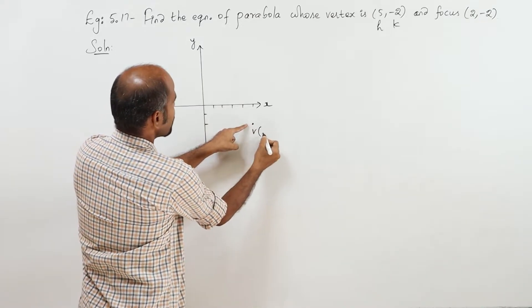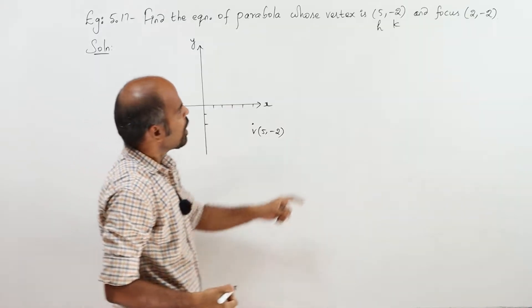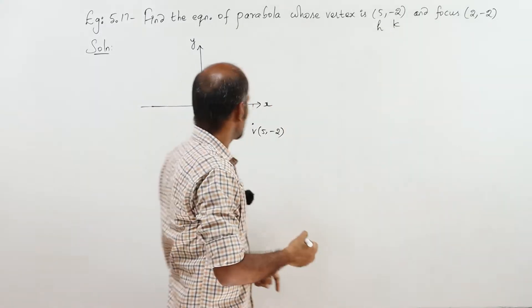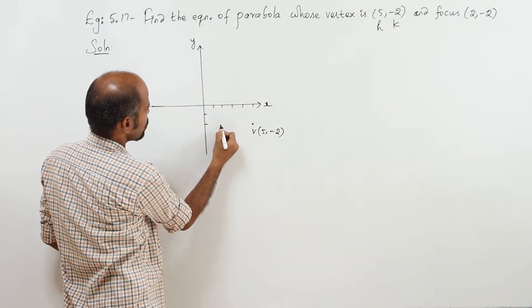Vertex is 5, minus 2. And focus, 2, minus 2. 2, minus 2. It's the focus.